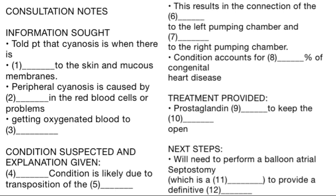And how is it being treated? We started a prostaglandin medicine to keep the ducts open because it closes naturally after birth. We will also need to do a balloon atrial septostomy, which is a surgical procedure in which a small hole is created between the upper two chambers of the heart, the atria. This will improve the mixing of oxygenated and deoxygenated blood at the atrial level, but ultimately an atrial switch operation will need to be performed to provide a definitive correction.